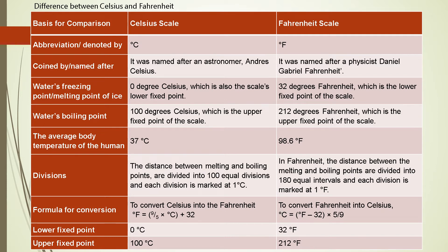The formula for conversion from Celsius to Fahrenheit is: °F = (9/5 × °C) + 32. The conversion from Fahrenheit to Celsius is: °C = (°F − 32) × 5/9.